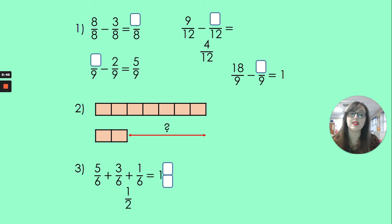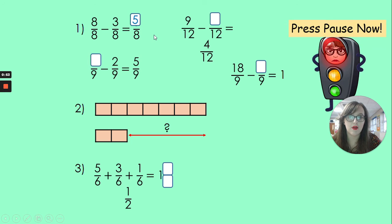So I'm going to go through the answers in 3, 2 and 1. For our first one, 8 eighths take away 3 eighths should leave us with 5 eighths. 9 twelfths take away blank twelfths gives us 4 twelfths. Well we know that 9 take away 4 gives us 5, so 9 take away 5 will give us 4.